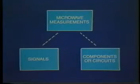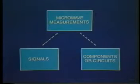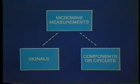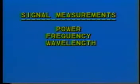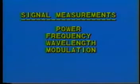These measurements are often separated into two categories. One is called signal measurements, and the other is called components or circuits measurements. Signal measurements are concerned with the important dimensions of existing microwave signals, including power, frequency, wavelength, modulation characteristics, and bandwidth.